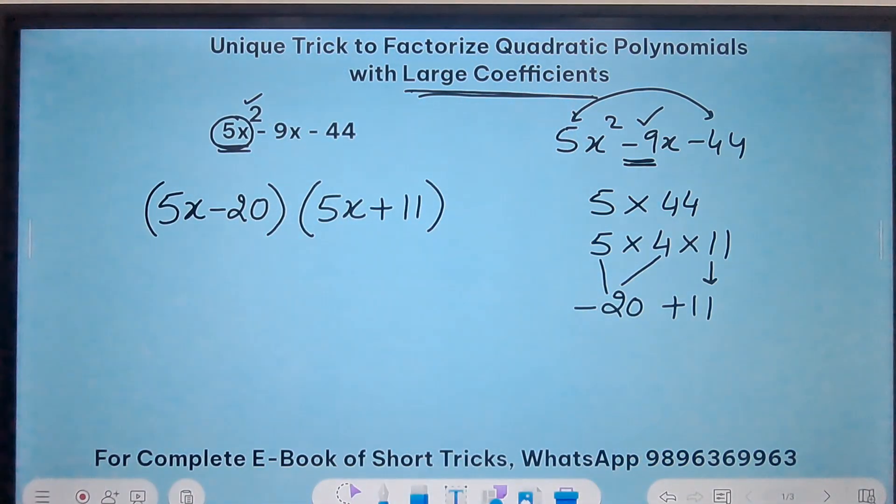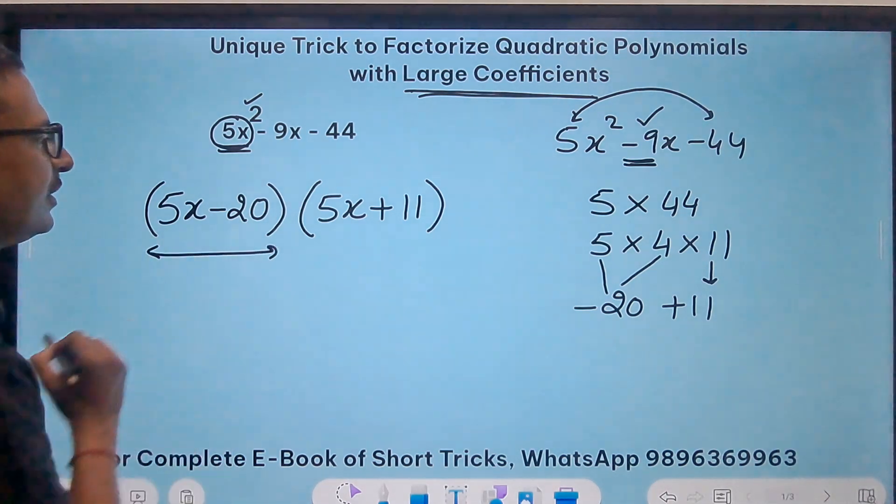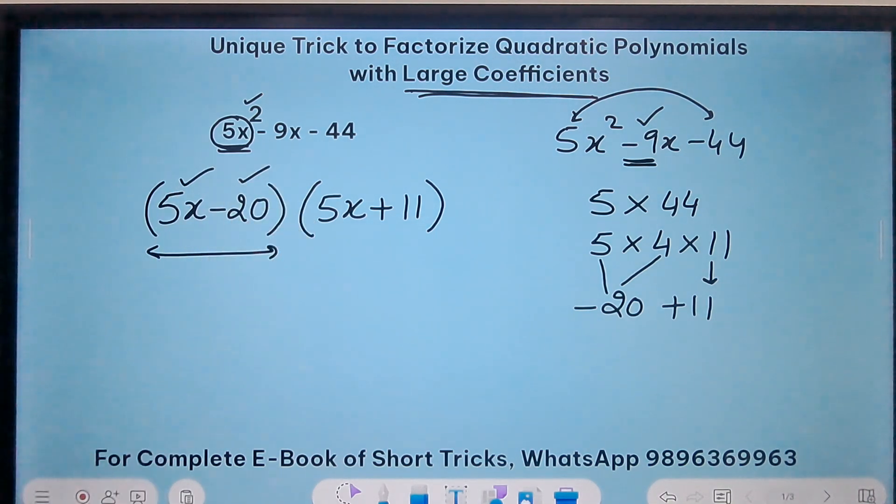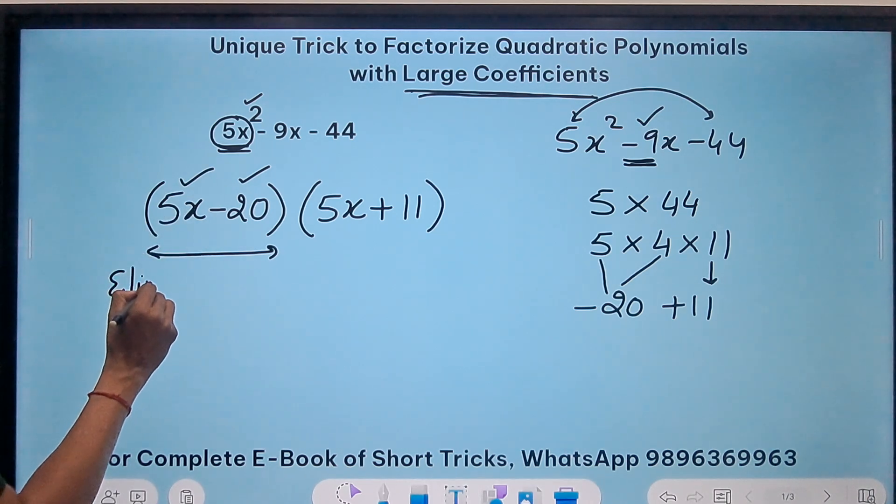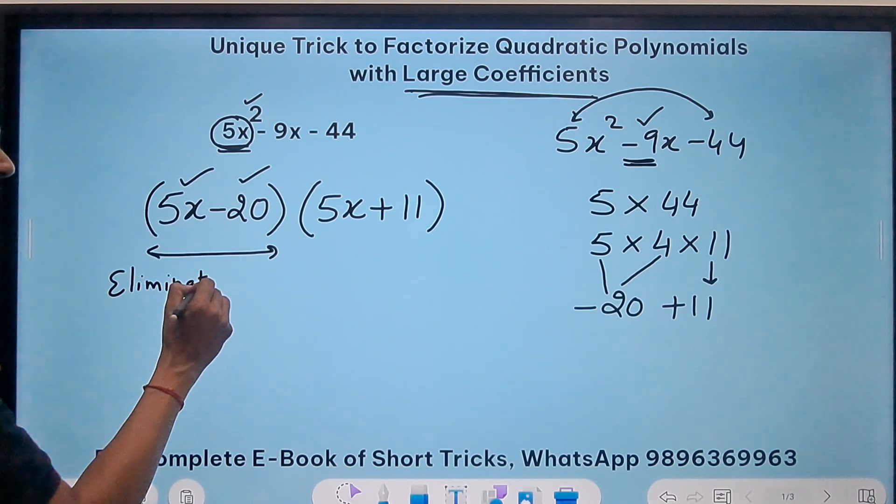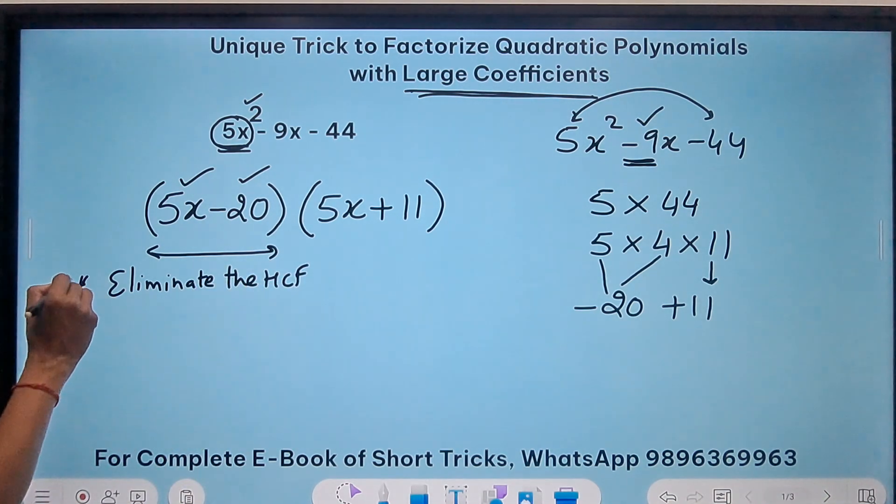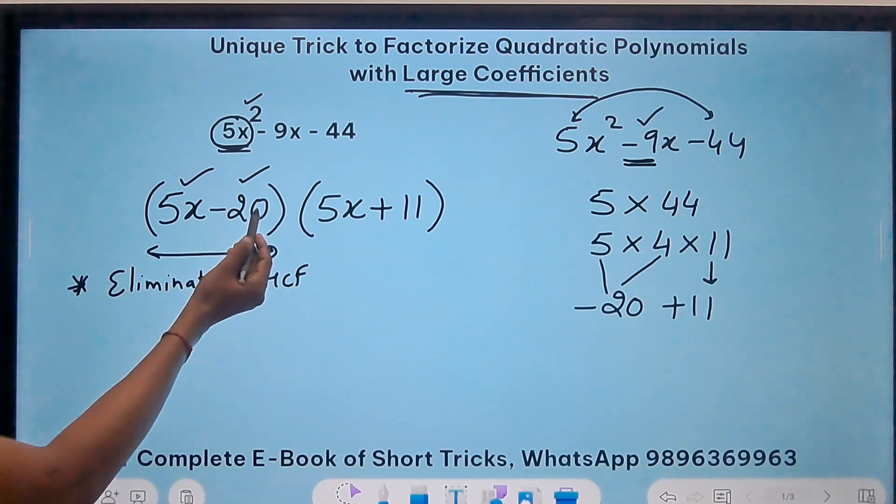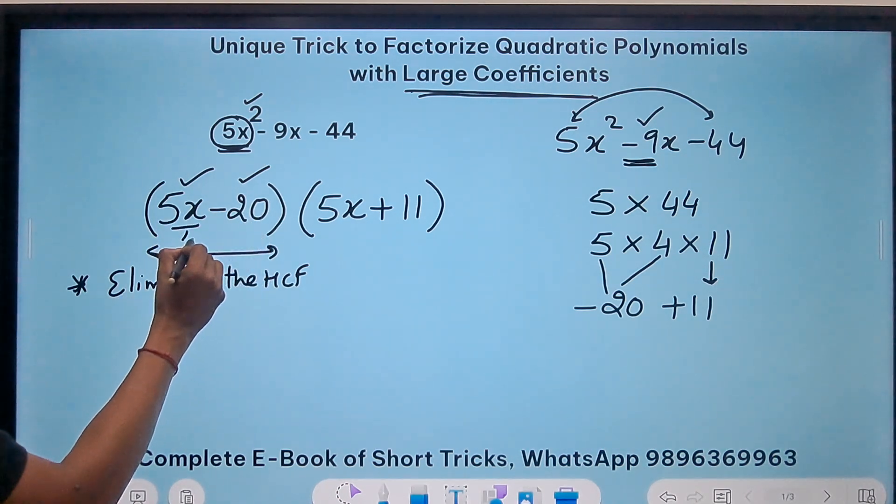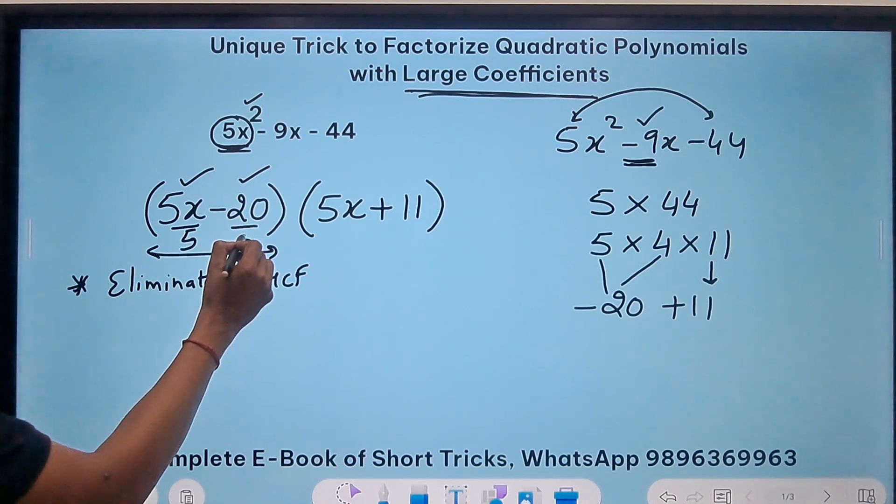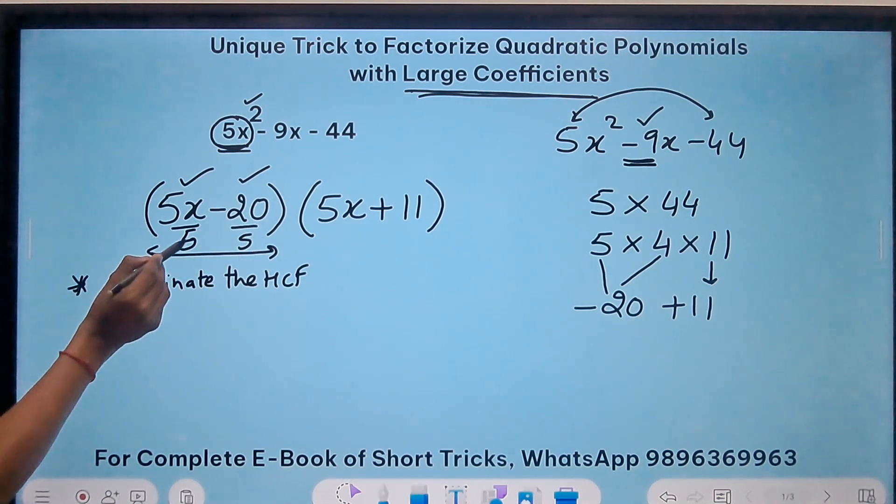Now is that the final answer? Not at all. I can see a common factor here in this bracket. The highest common factor between 5x and 20 is 5. So what will I do in this step? I will eliminate the HCF from each bracket. Now this is the important step. So 5x and 20, if I divide both of them by 5 because 5 is the highest common factor, this 5 will get cancelled. So I will have an x here minus 20 upon 5 is 4.